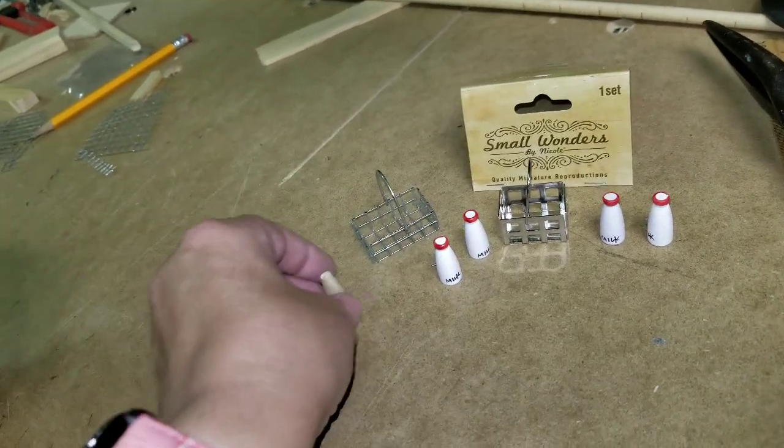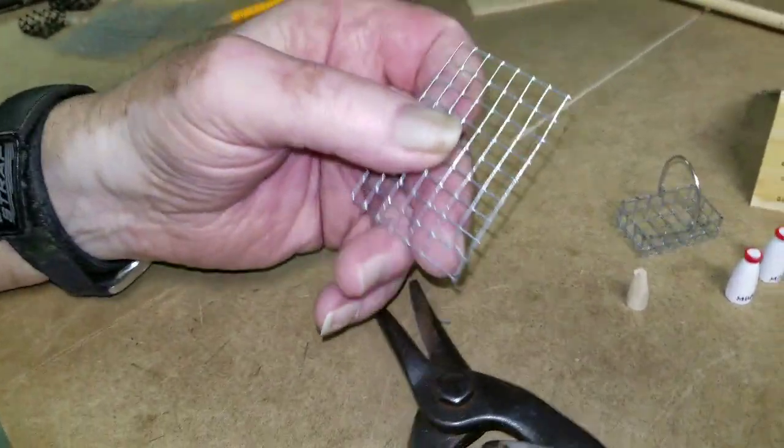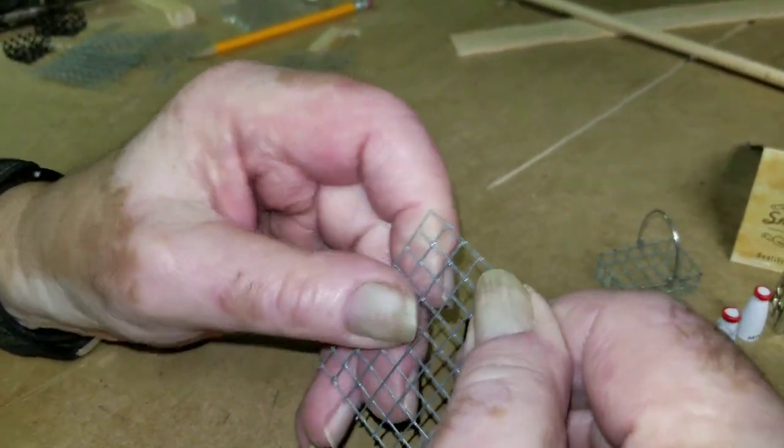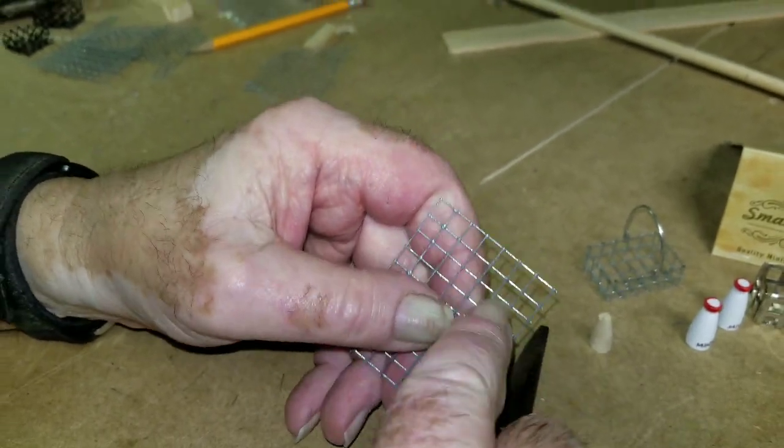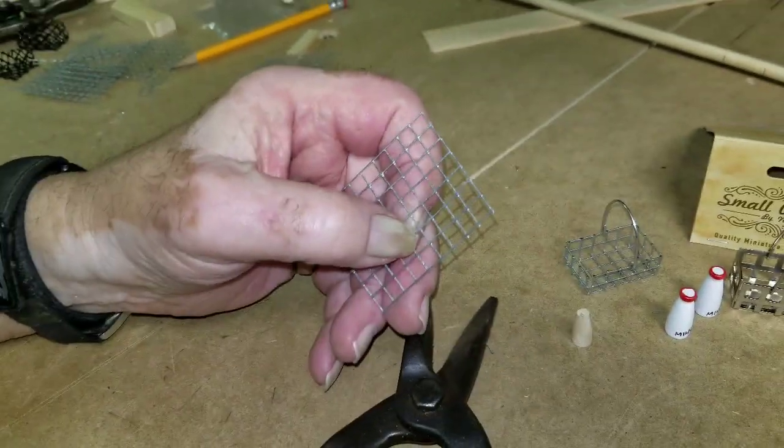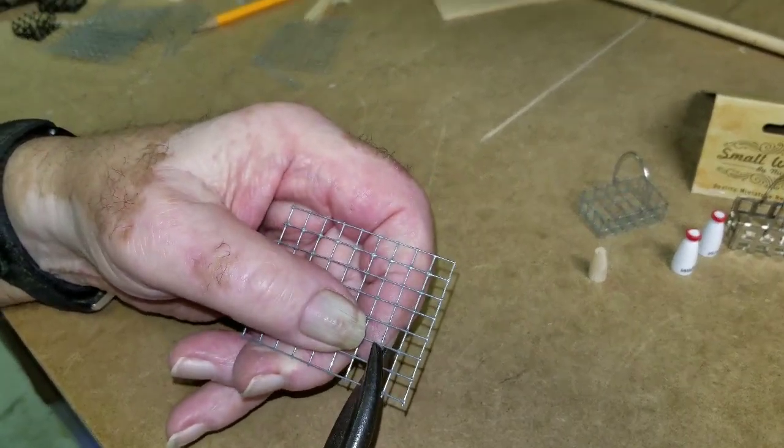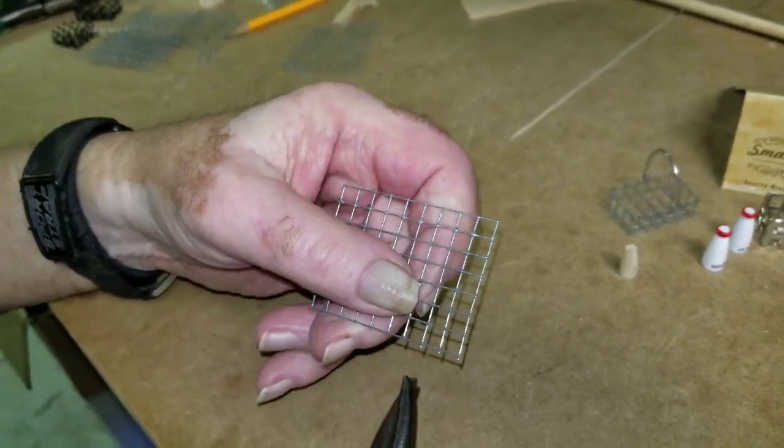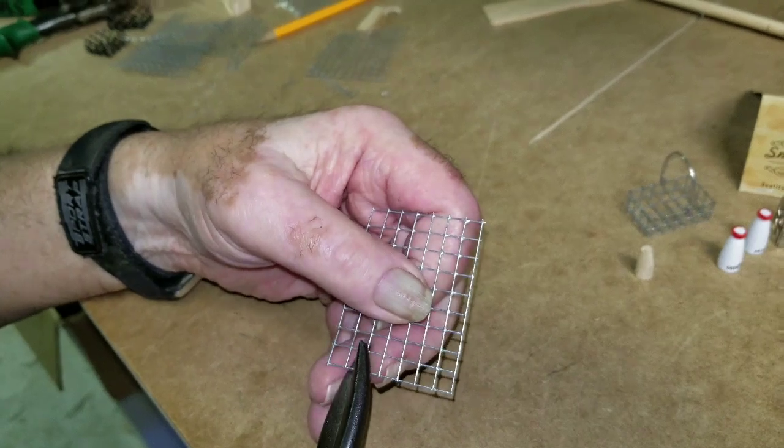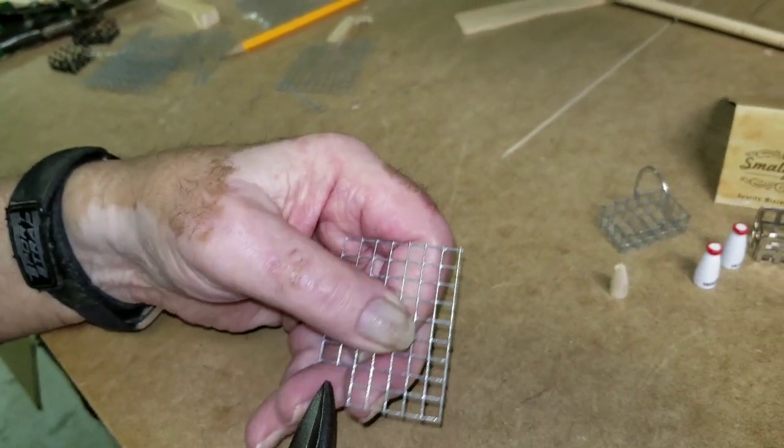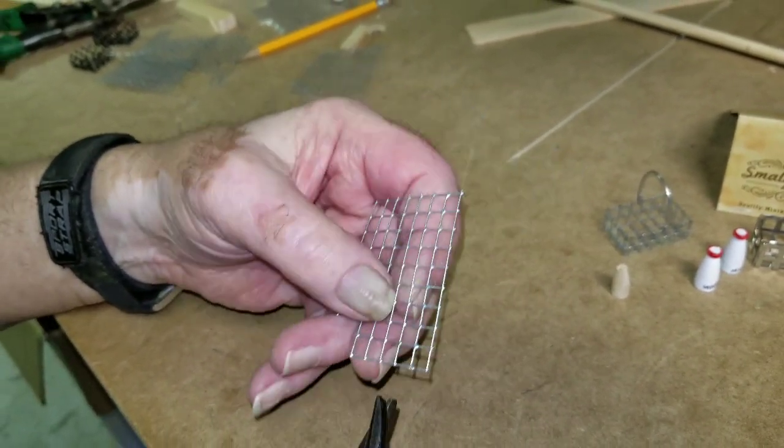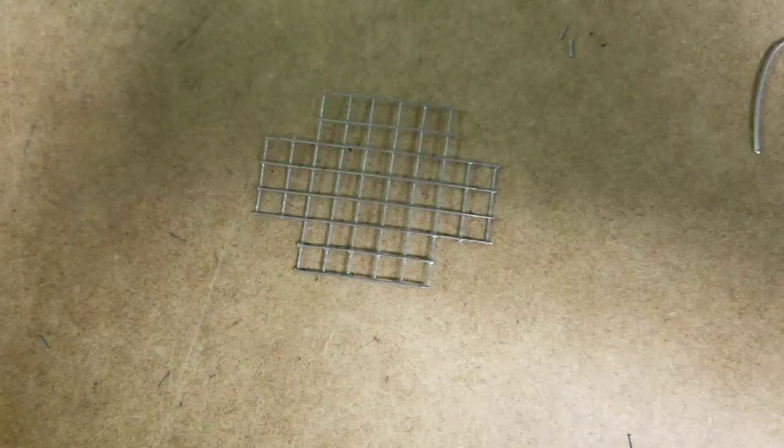And then you want to go ahead and cut them like this. You want to cut the corners out of it. You want to leave this wire and leave that wire. So we're going to do it this way. Cut those two. And cut those two. And that corner will come right out. And do the same thing to all four corners.